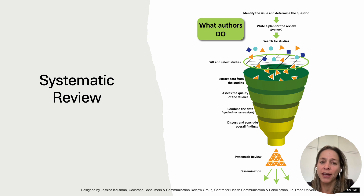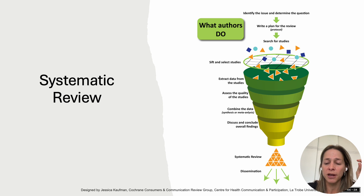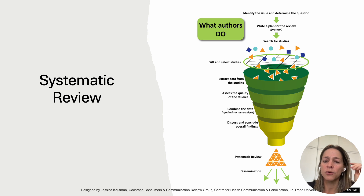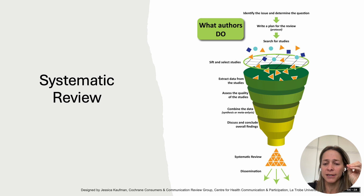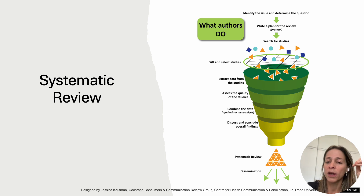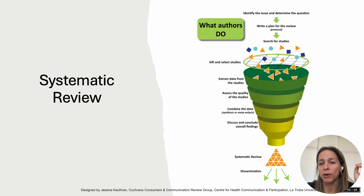In a systematic review, we're going to search for all primary evidence on a specific topic. By primary evidence, I mean the actual clinical studies conducted in patients — either randomized controlled studies, cohort studies, or case control studies. At the end, we summarize all this evidence and analyze the findings in an overall result. Therefore, we cannot include another review in this review. We cannot include systematic reviews or meta-analyses. Systematic reviews can only include primary evidence or primary studies.